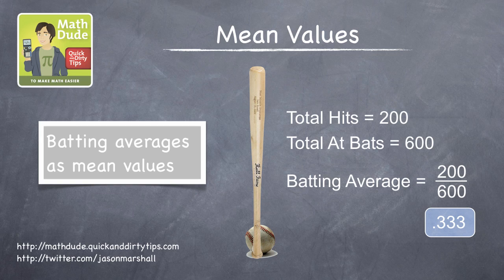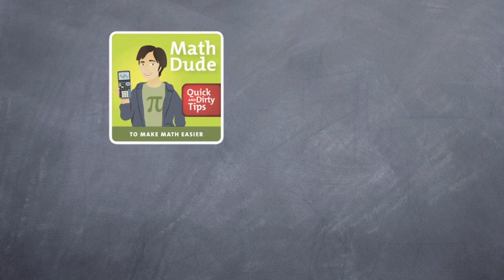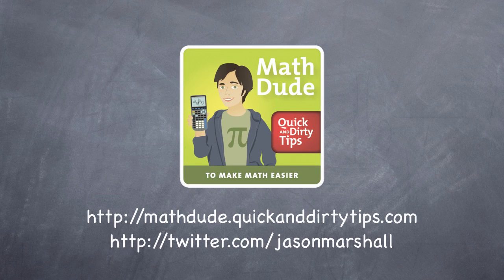That's it. It's pretty simple, and it really is the same thing as calculating a normal mean value, except in this case, all the values you're adding up are either 1 or 0. Okay, that's all for now. Until next time, this is Jason Marshall with this week's Math Dude Video Extra. Thanks for watching, math fans.